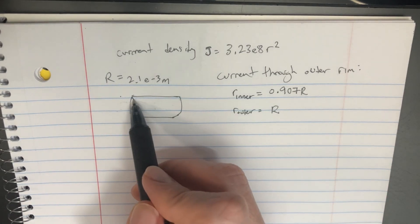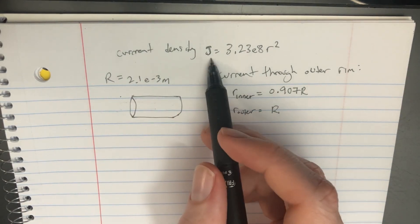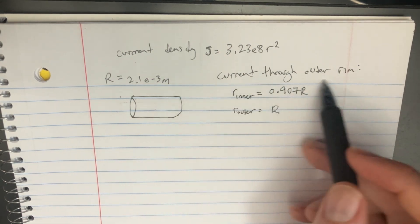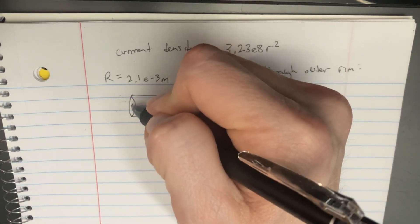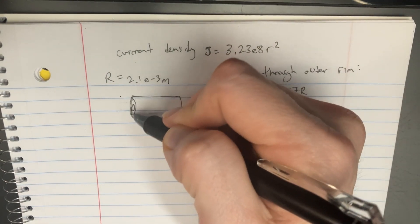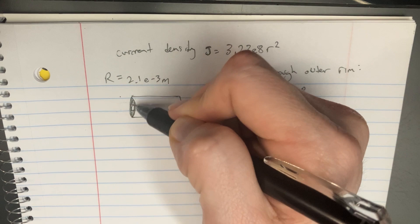In this problem, we have a wire with a current density j given as a function of r. We're looking to find the current through the outer rim. Let's say we draw a smaller circle here - we're looking to find the current around here, so we're going to cut out a circle.